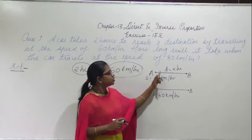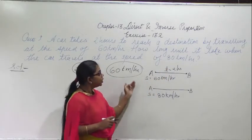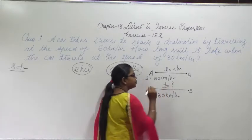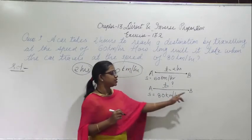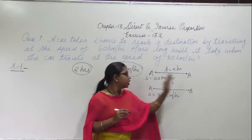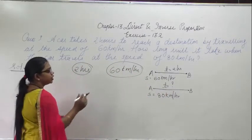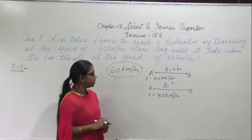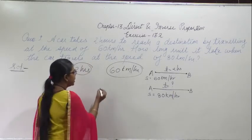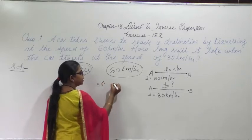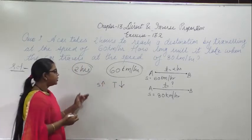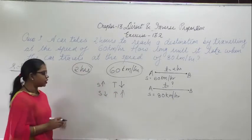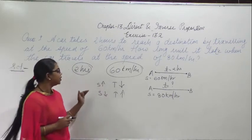Here the speed was 60 km, so time taken was 2 hours. Now you have increased the speed. So at what time will this car reach the destination point B? Here you are getting a condition of inverse proportion. If speed is increasing, the time will decrease. And if the speed is decreased, the time is increasing. So here you are getting a condition of inverse proportion.